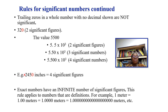In a measured value, zeros that are on the right of the last non-zero digit of the measurement are significant. For example, if we have 2450 inches, the trailing zero is significant, so this value has four significant figures.